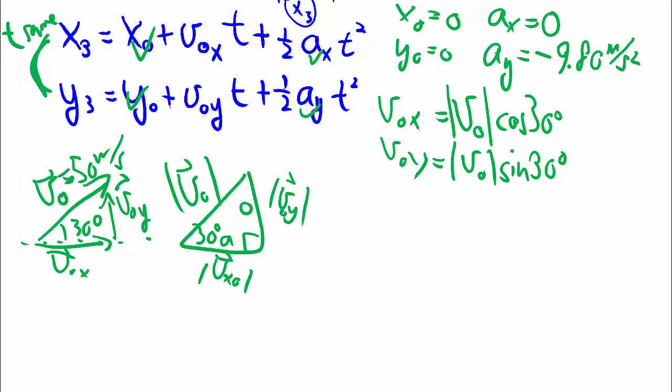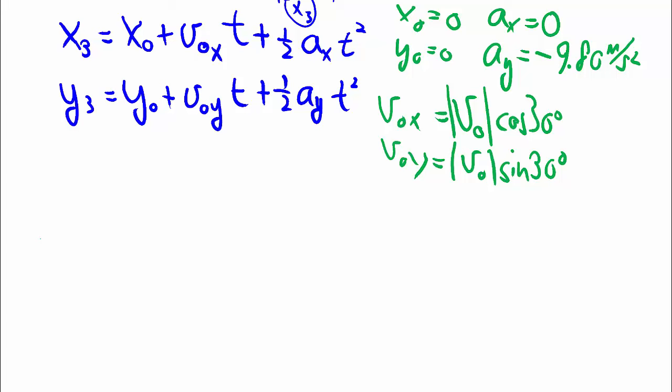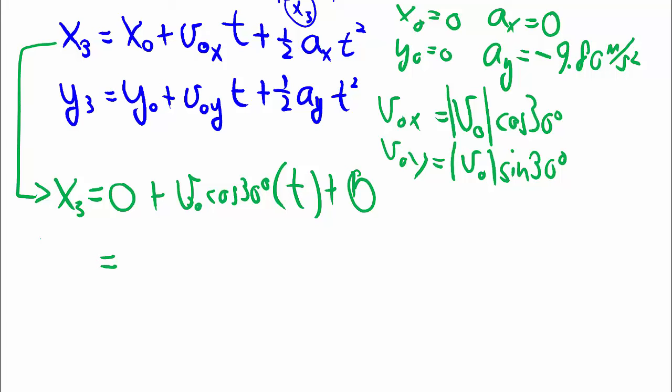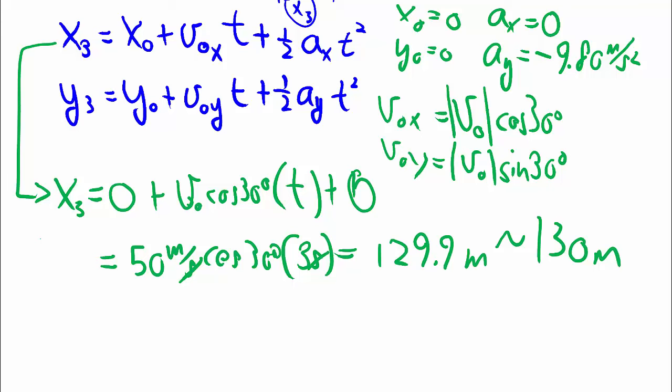So now that we have all these information, let's sub it in and get our answers. x, or the x position at 3 seconds, we sub in everything, x0 was 0 plus vO cosine 30, that's my vOx times my t plus 0 again, because Ax is 0. So that's nice and simple. So we have 50 m per second, cosine 30, and the time that has passed between 0 and 3 seconds is 3 seconds, you end up with meters, calculator work gets you that. And in terms of proper sig figs, let's use 130 meters.